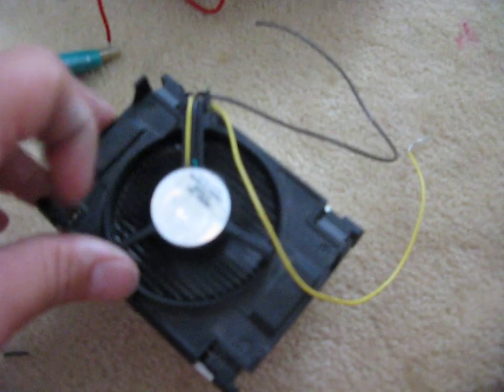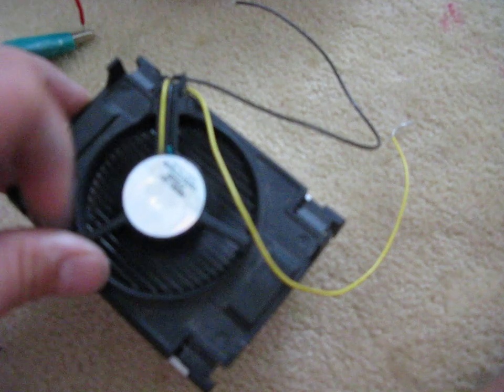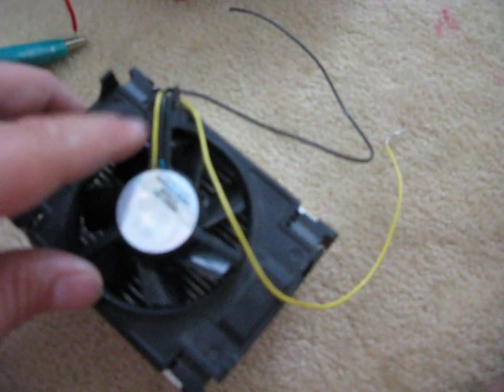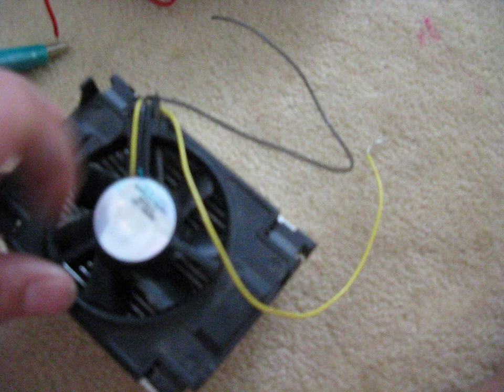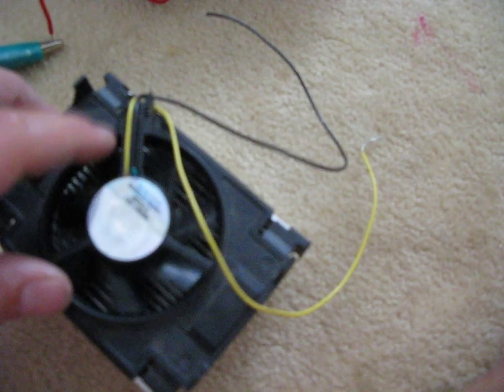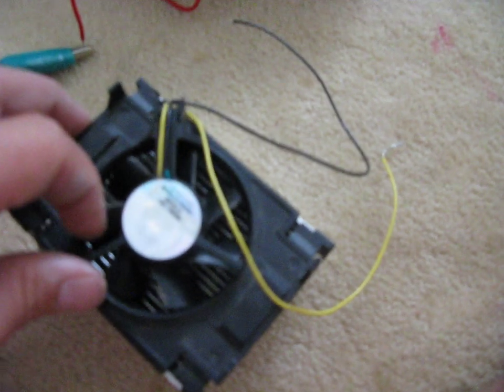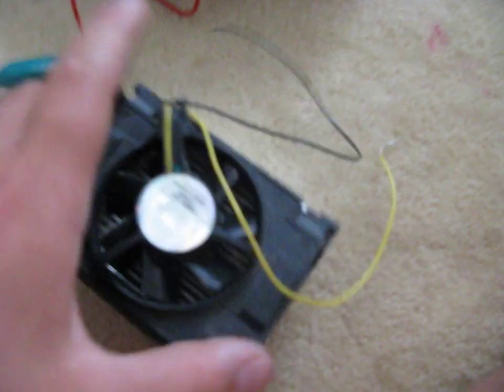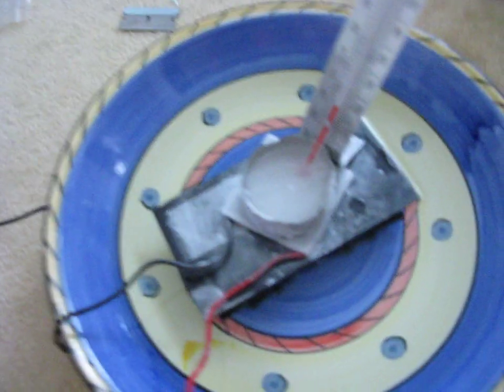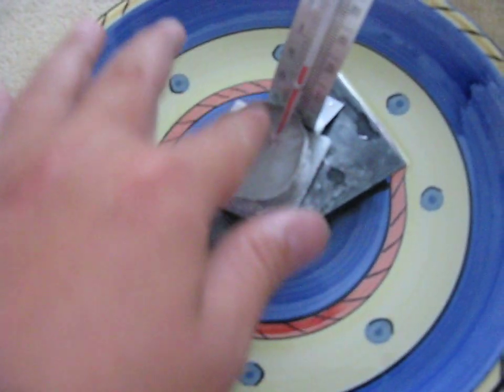When you are dealing with electrics it's good to call them ground and live because if you've got 240 volts and you touch the ground nothing's gonna happen. If you touch the live you get shocked. So yeah anyway it's fully frozen, that is totally wicked.